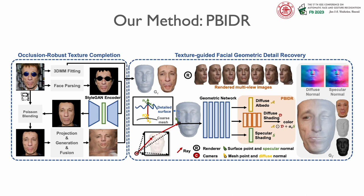We re-render the 3D face with the coarse geometry and the completed UV texture at various views, in order to gather a set of multi-view images of the subject. In that manner, we propose a physically-based implicit differentiable rendering framework, which approximates a bi-directional reflectance distribution function for facial images. Our framework separates diffuse and specular normals under coarse fitting constraints, obtaining rich geometric details using iterative optimization from the rendered images.